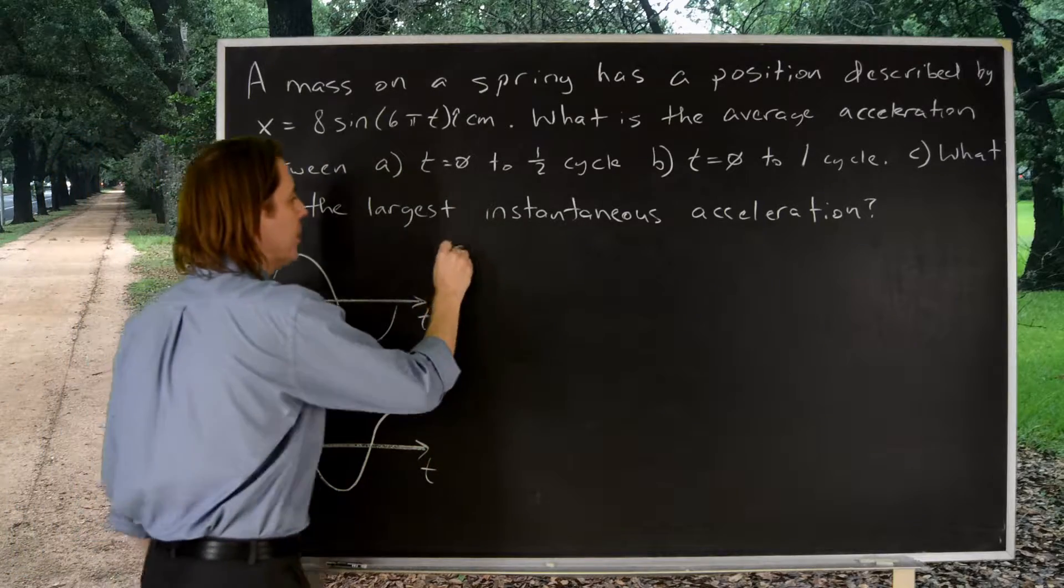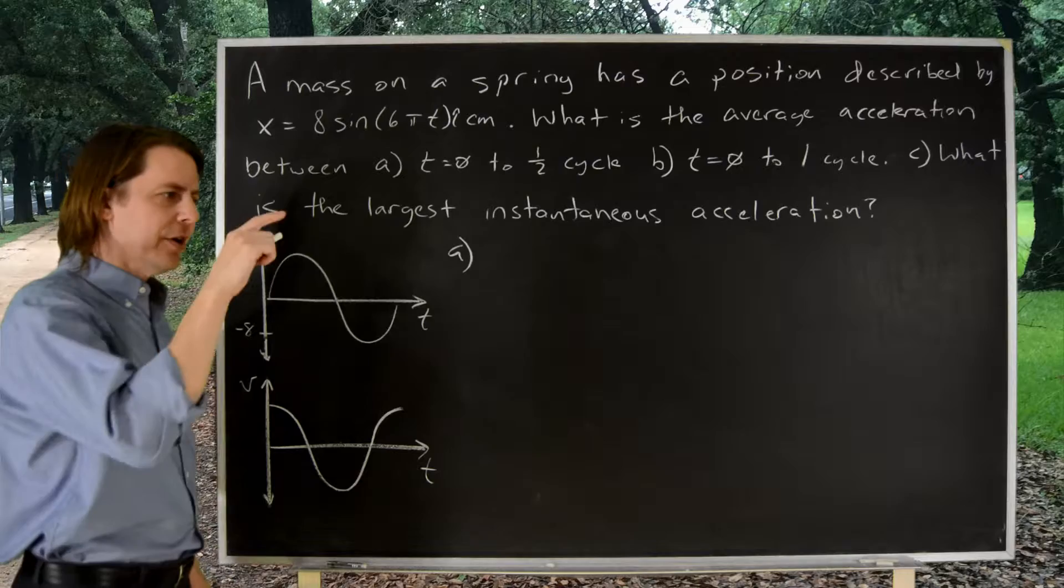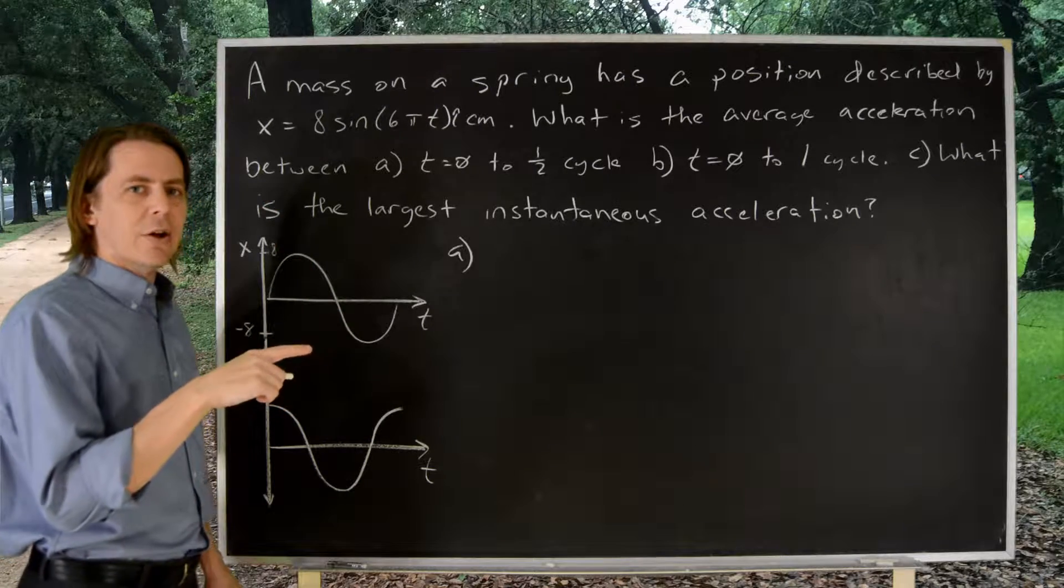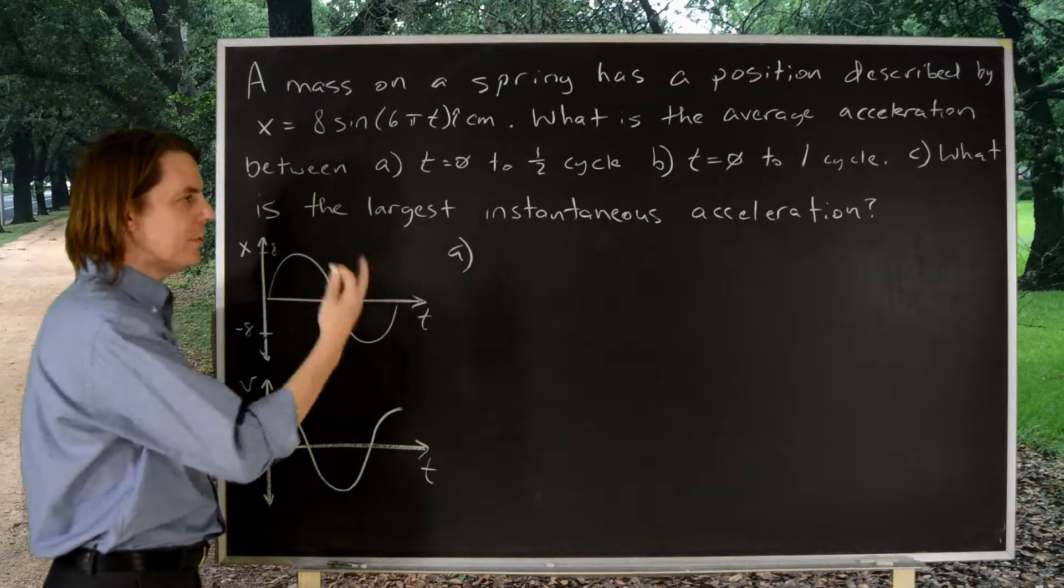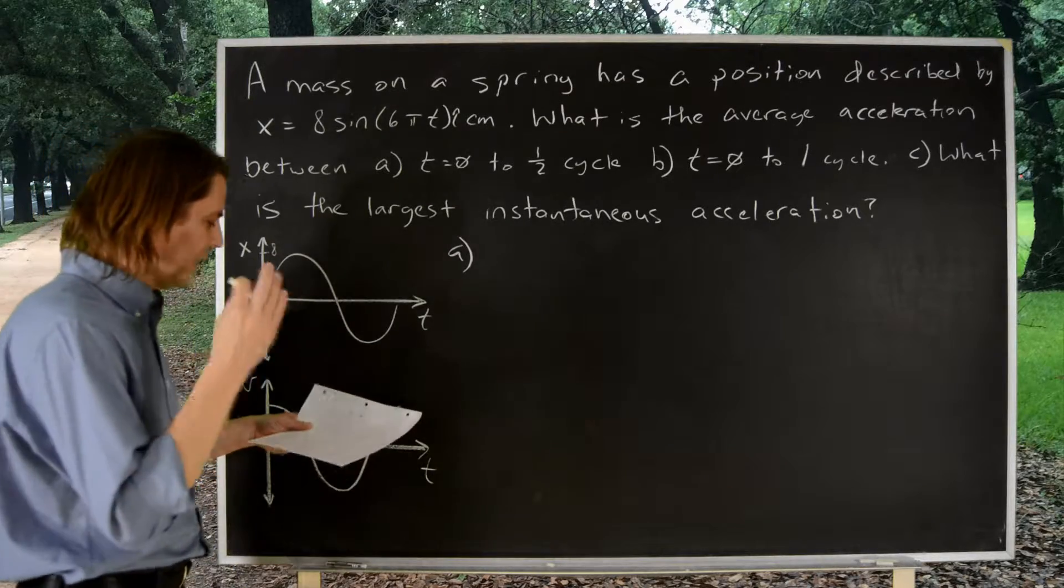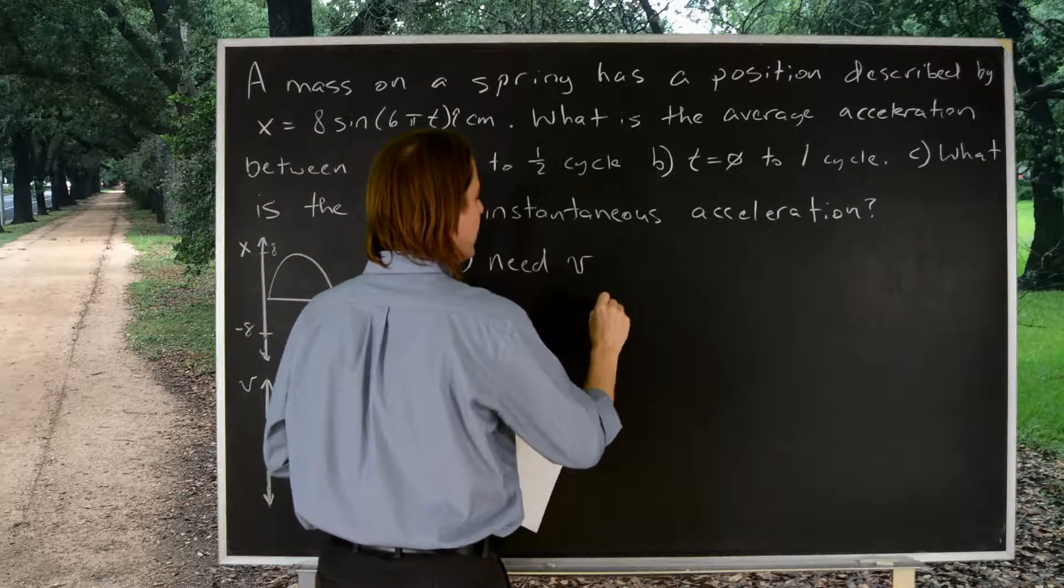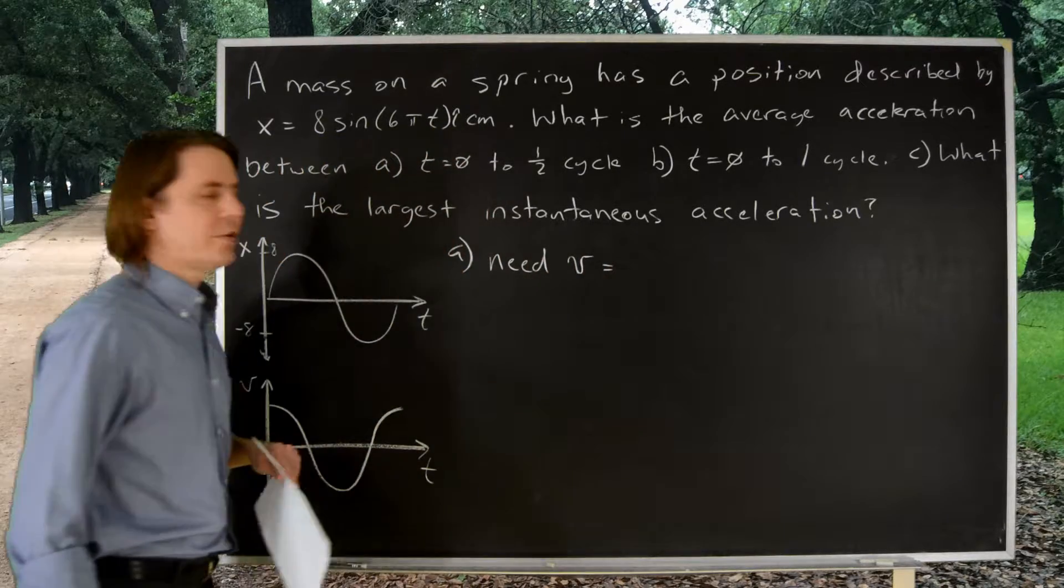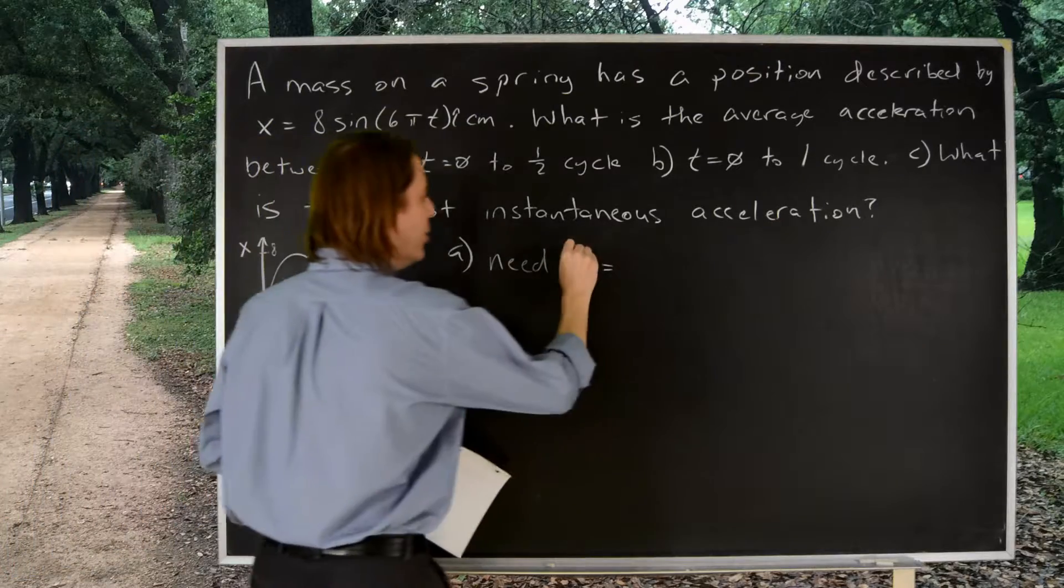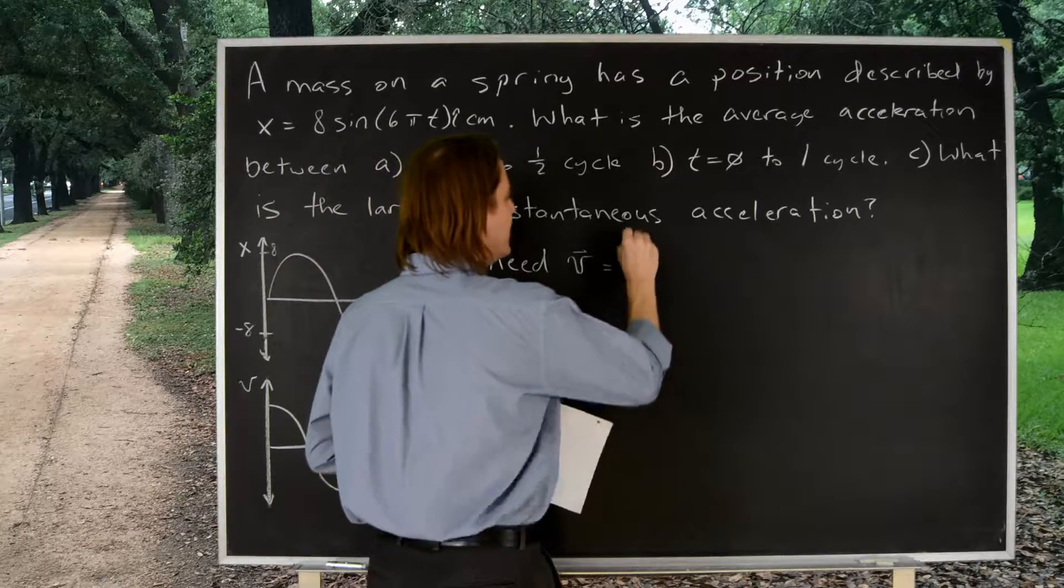So, let's look first at part A. The thing to remember about averages is they only depend on the final and the initial. And also, you don't really need the actual acceleration to get the average acceleration. It depends on the final and initial velocity. And this is calculus-based physics. So, we know how to use calculus to get v from position. We know that it is dx dt.